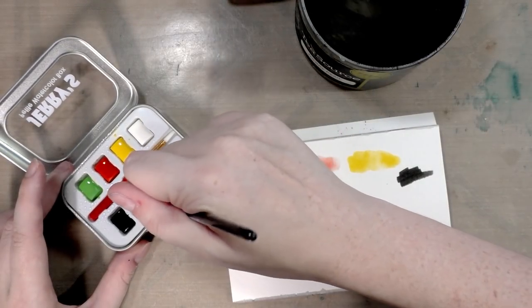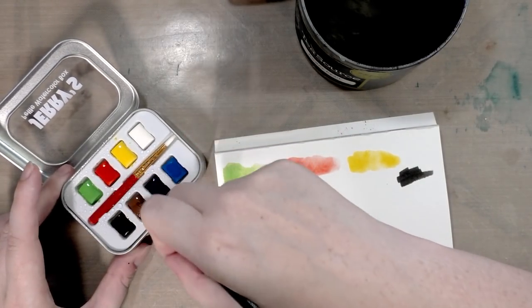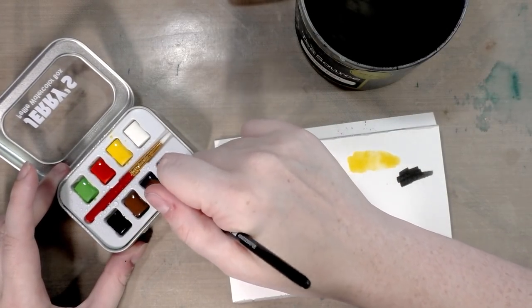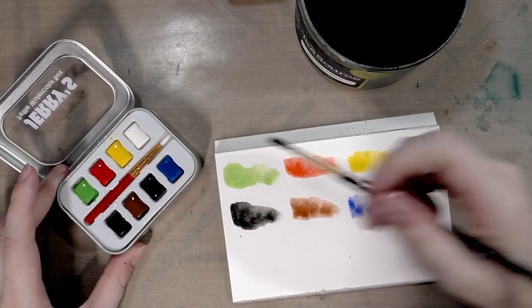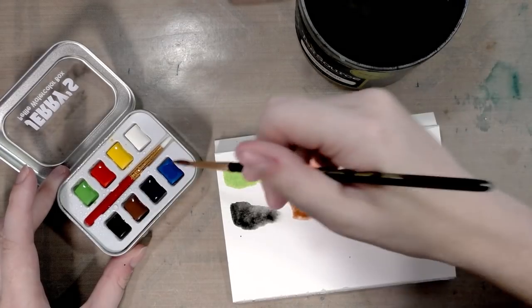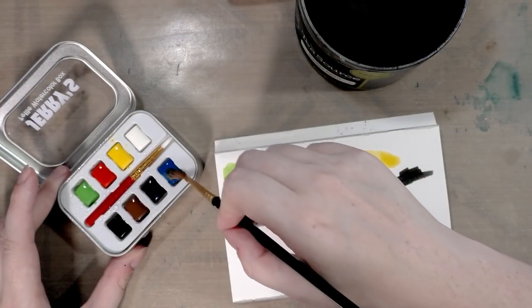We get a brown, kind of a weak brown. We get what looks like an ultramarine blue and then what looks like maybe a cerulean blue.